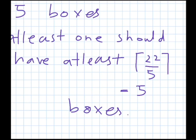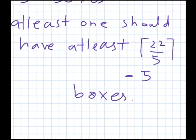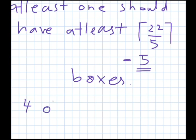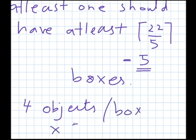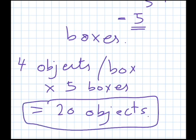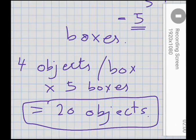Rather than proving the general statement, let's prove this specific example. We have 22 objects and five boxes. If we put less than five objects in each box, then we have at most four objects per box times five boxes, which gives 20 objects. This means if we have less than five objects in each box, we cannot have our desired 22 objects.